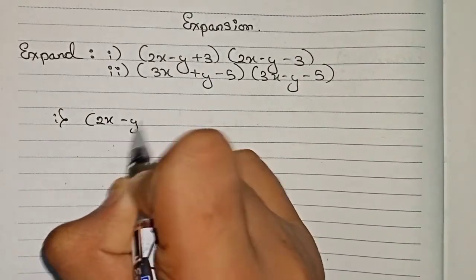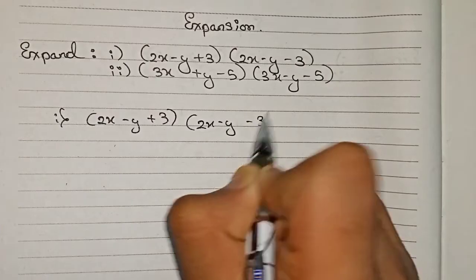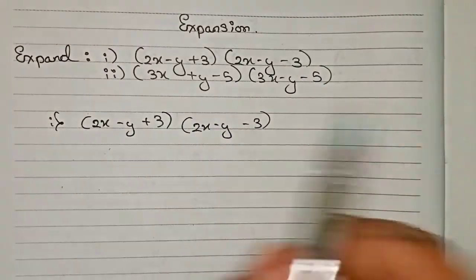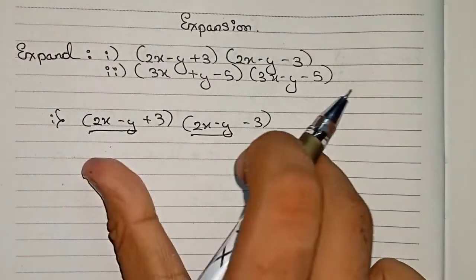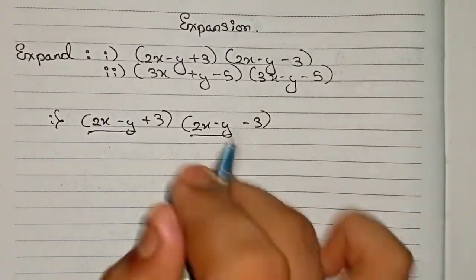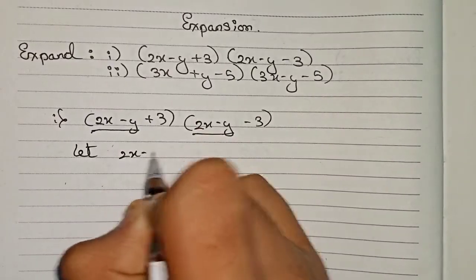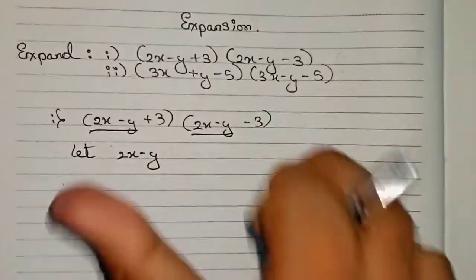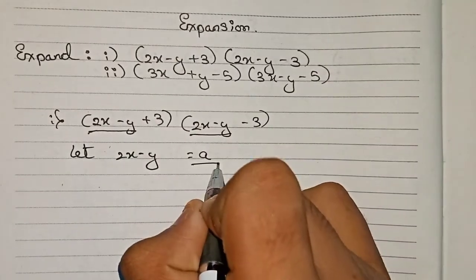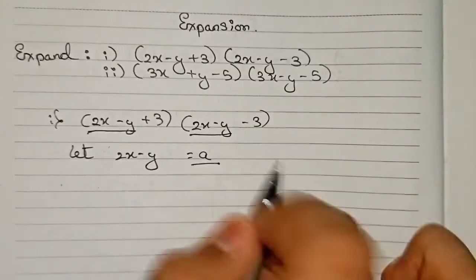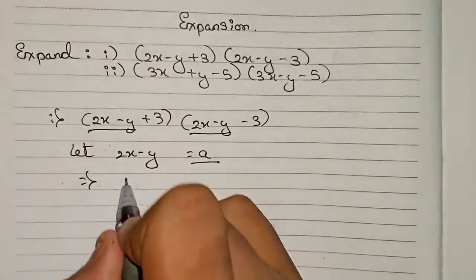In the first question, (2x minus y plus 3) multiplied by (2x minus y minus 3), you can see that 2x minus y is common on both sides. So let 2x minus y equal to a. We will solve this question by replacing 2x minus y with a.